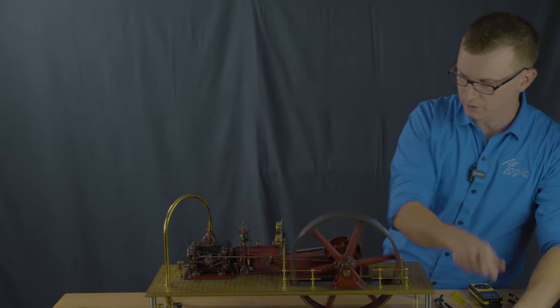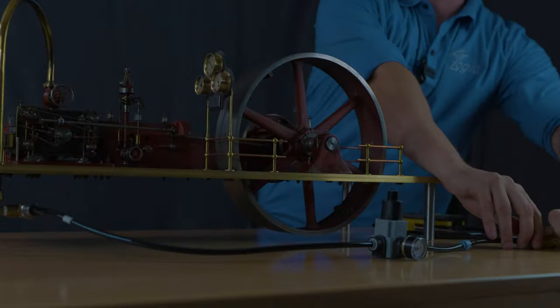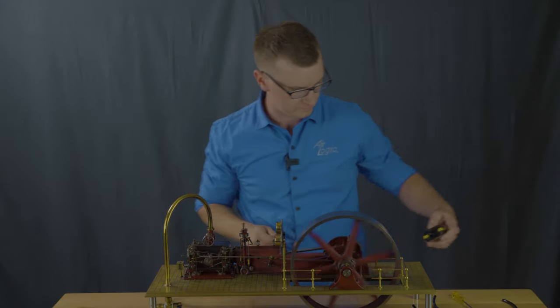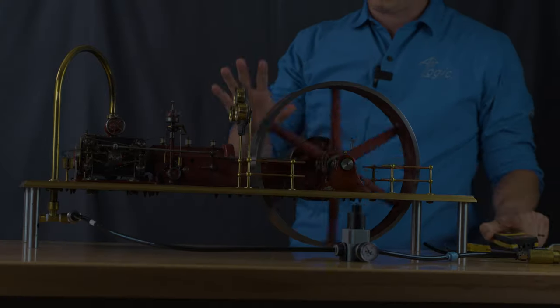So let's try a little bit of a faster speed. Turn this back on. Alright, now we're cooking, definitely going a little bit faster here. Let's get a reading on the tach. Okay, we're up to 63 RPMs.